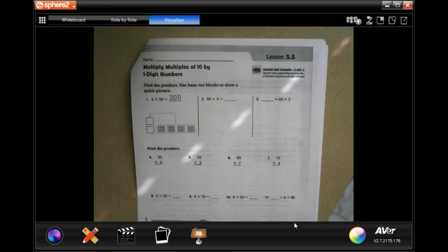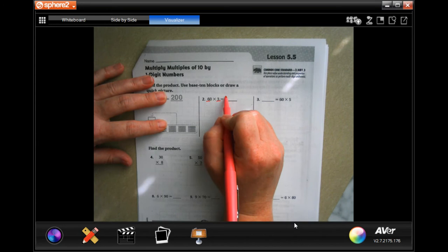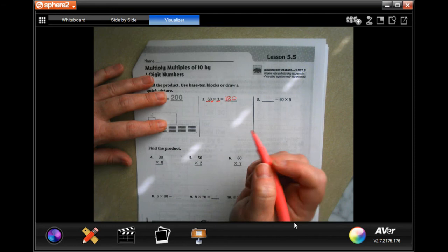Hey guys, welcome to third grade chapter five lesson five. We're going to go ahead and start it with number two. Now instead of doing the ten blocks, we are actually going to show you a little bit easier way to do this. So three times six is 18, and then we're going to attach that zero on. Okay, makes it a lot easier.